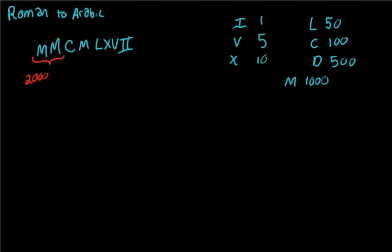Then the next thing we have a C and then another M. Now if you remember, whenever we have a lower number then a higher number, we're actually subtracting. So this is going to be 1000 minus 100. It's 100 because the C means 100 subtracted from M, 1000. So 1000 minus 100.